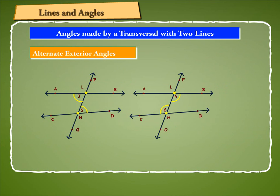In the figures, angle 3, angle 5 and angle 4, angle 6 form pairs of alternate interior angles.